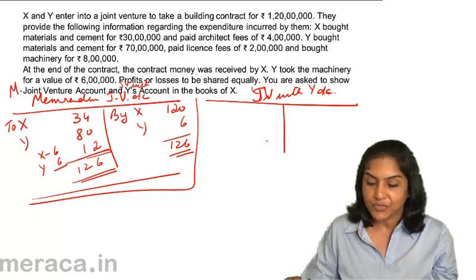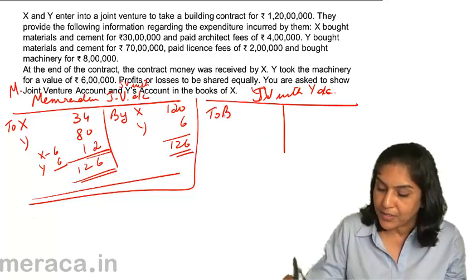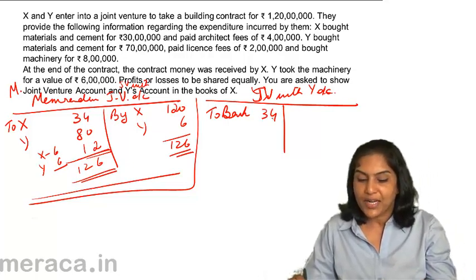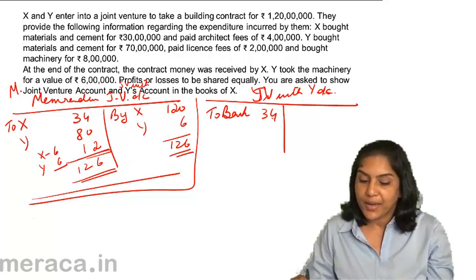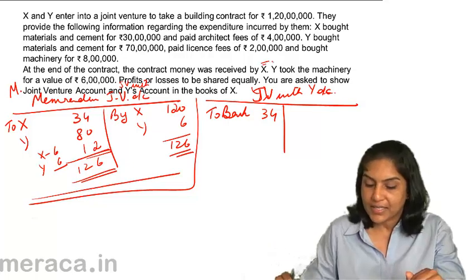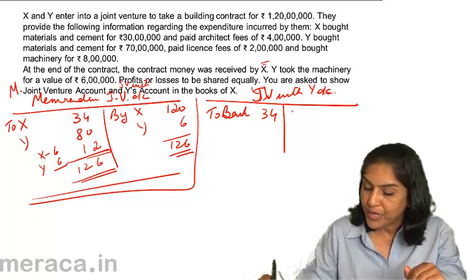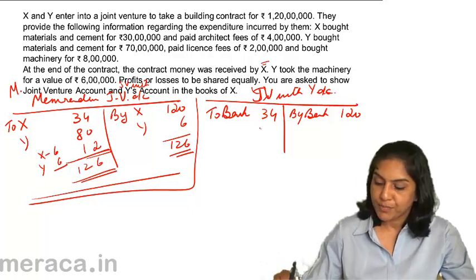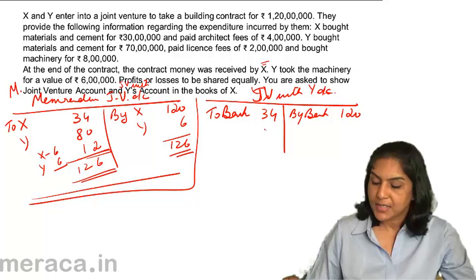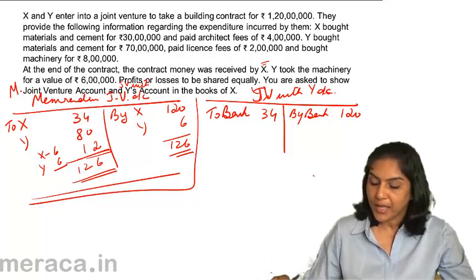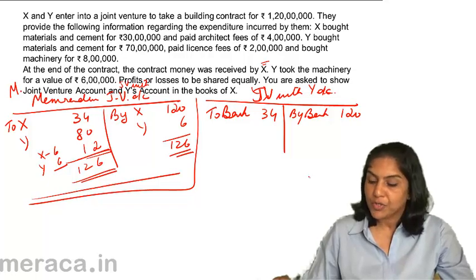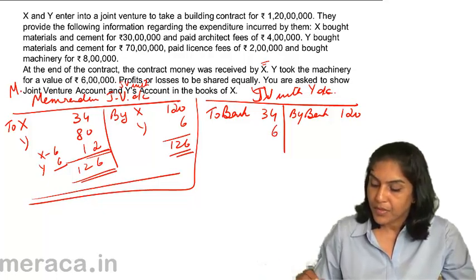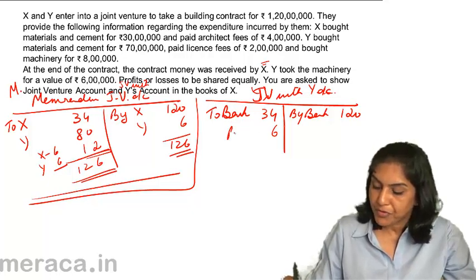X incurred an expenditure of 34 lakhs — joint venture with Y account debit to bank, assuming cash was paid. So this would be 34 lakhs. Y incurred expense of 80 lakhs, so there is no entry for that. At the end of the contract, money was received by X, so bank account debit to joint venture with Y account — 120 lakhs. We have the expenses paid by X debited to the joint venture account and income of 120 lakhs. For the profit or loss, it would be joint venture with Y account debit to profit and loss account — 6 lakhs as X's share of profit.